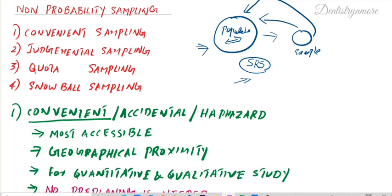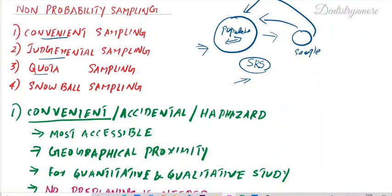Hello everyone, welcome back to another session in dentistry and more. Today we have non-probability sampling. Last time we covered probability sampling. In non-probability sampling, we have four types: convenient sampling, judgmental sampling, quota sampling, and snowball sampling.